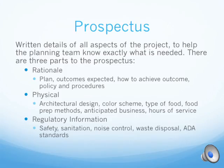The physical and architectural components include design, color scheme, type of food, food print methods, anticipated business, and hours of service, and it should be built based off the food service style — this helps the architect know what he needs to build. There is also regulatory information such as safety and sanitation, and they need to show how these standards will be met for the project to be approved.